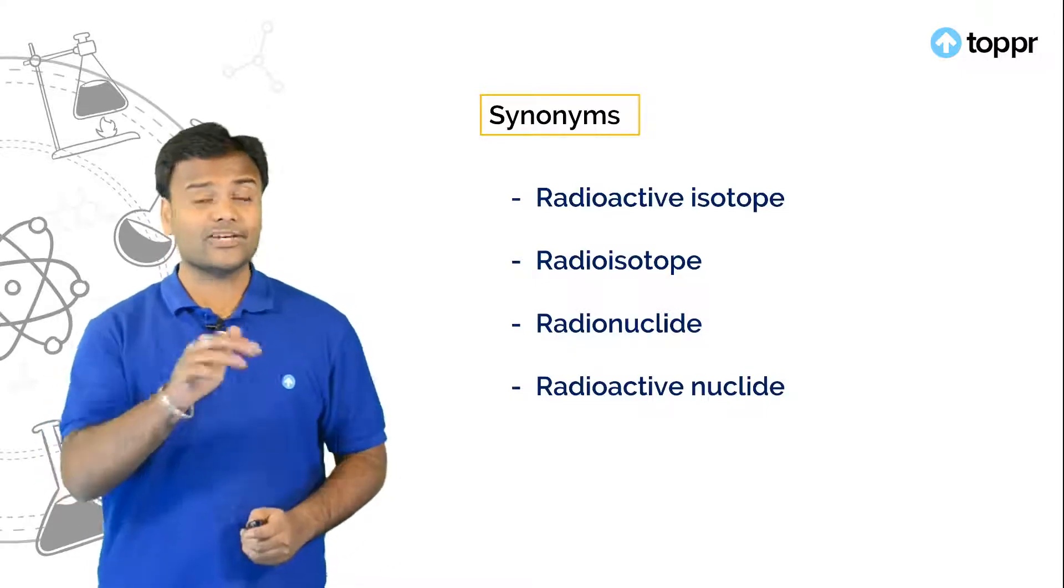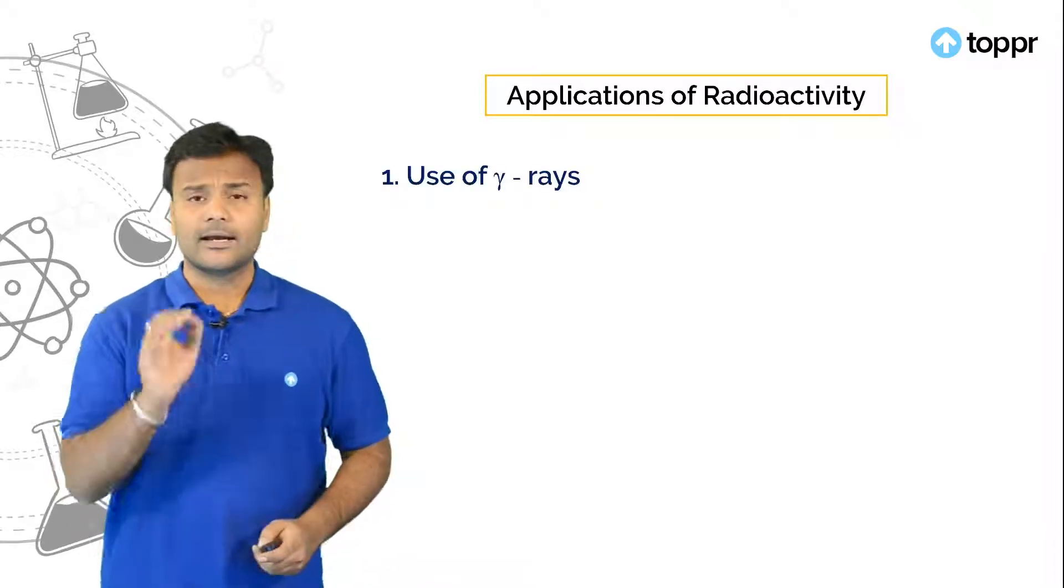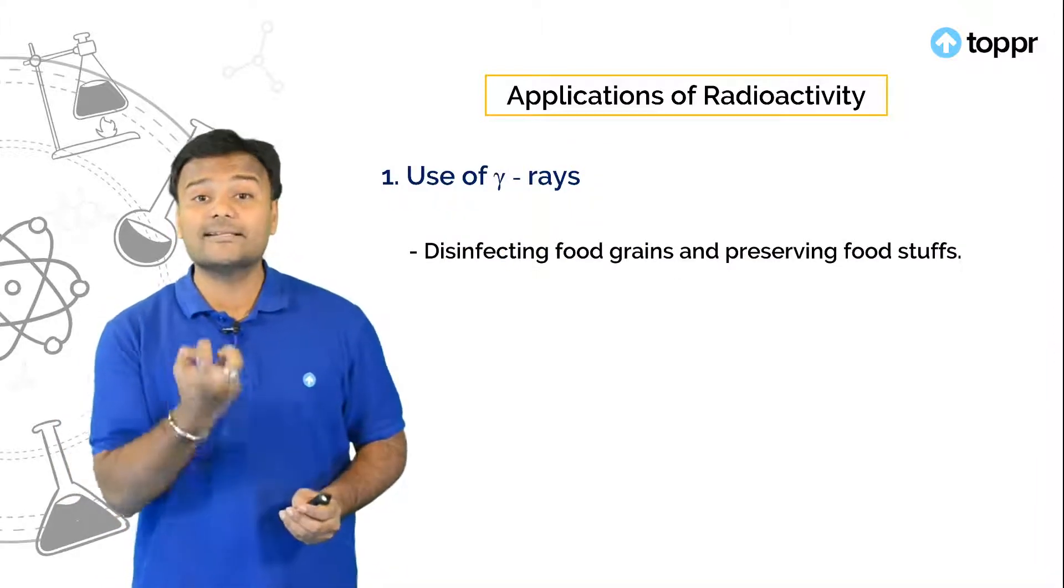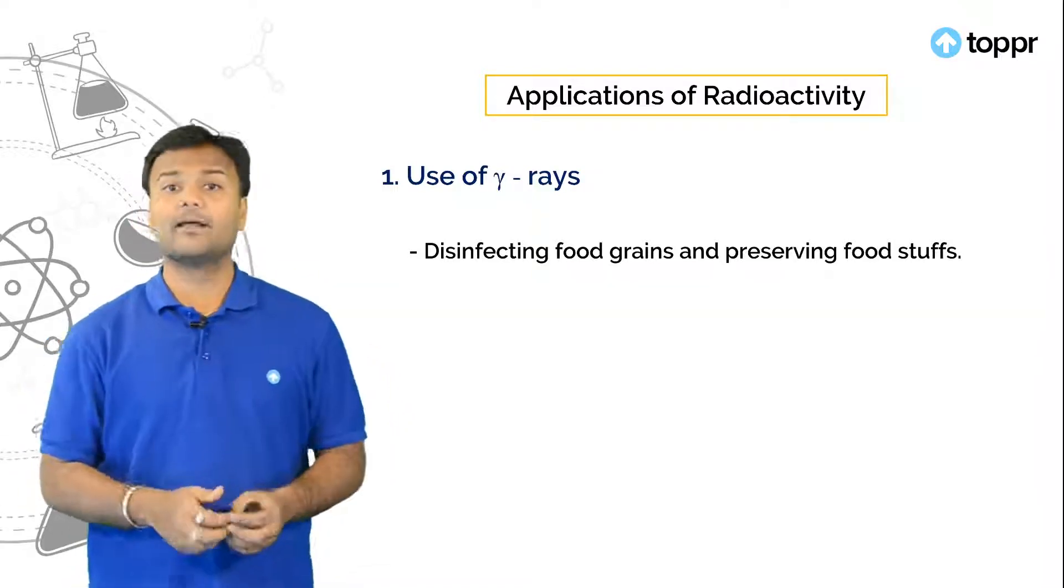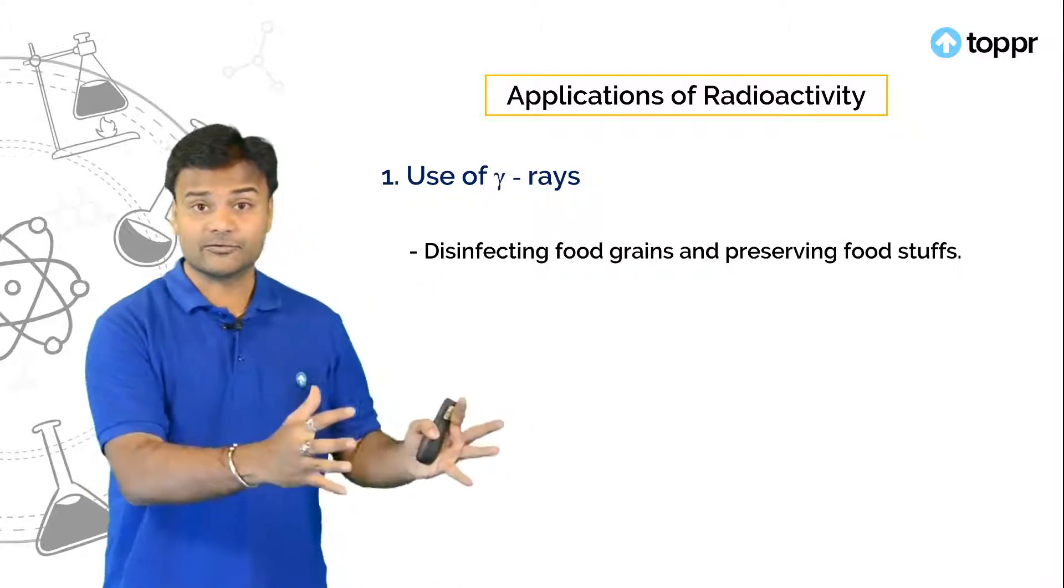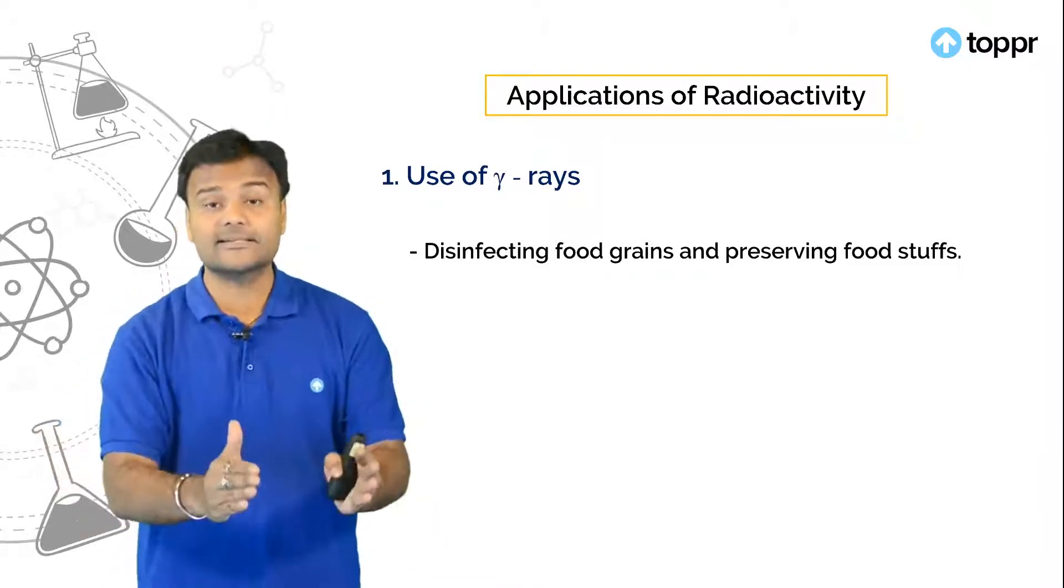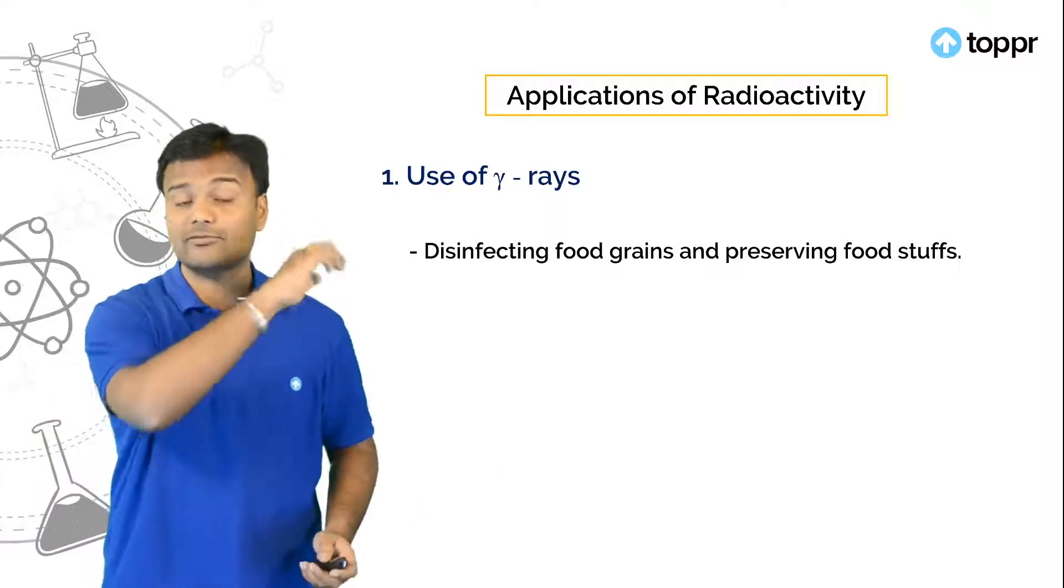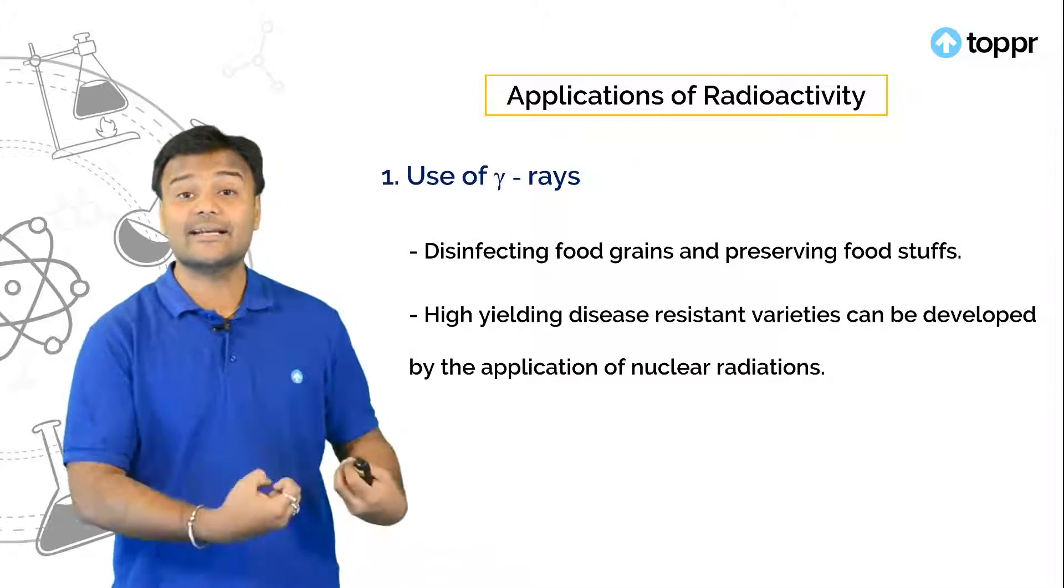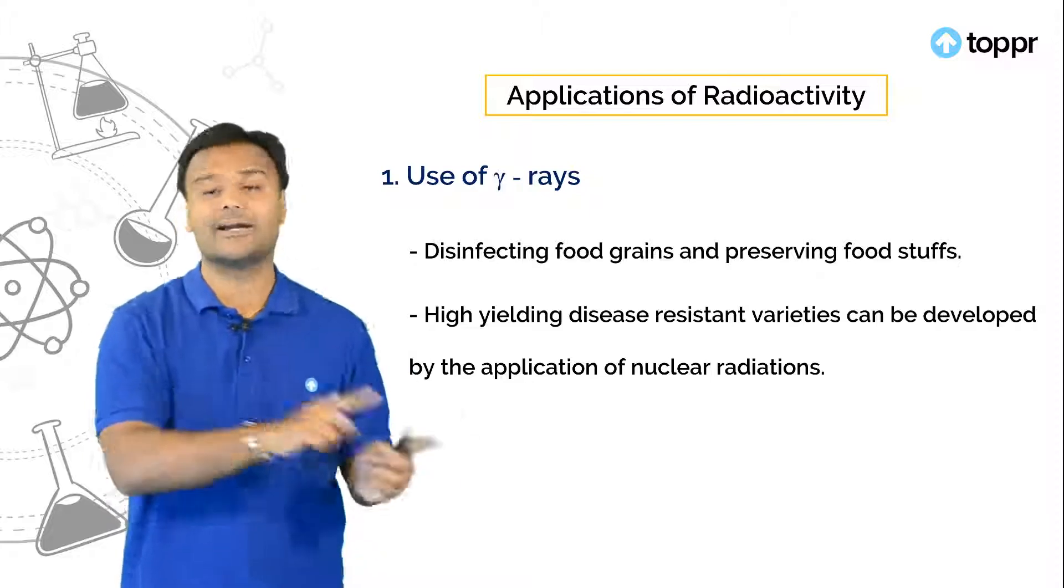Let us look into the applications of these radioactive isotopes. The first being the use of gamma radiations. Gamma radiations are mainly useful in disinfecting food grains and preserving food stuff. Say for example fruits, vegetables or food grains. When you irradiate these stuff with gamma radiations they increase their shelf life. That means you can preserve them for longer periods. So this is one of the use. And you can see that lot of disease resistant variety of crops can be built. If those seeds were irradiated with gamma radiations.